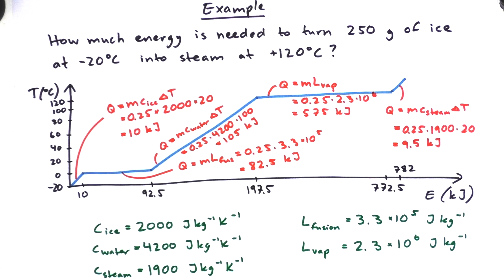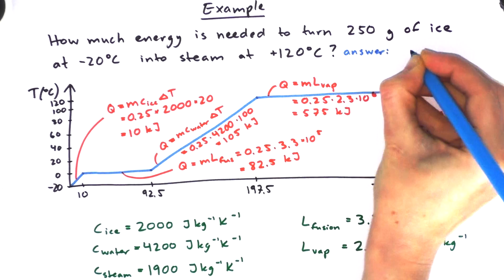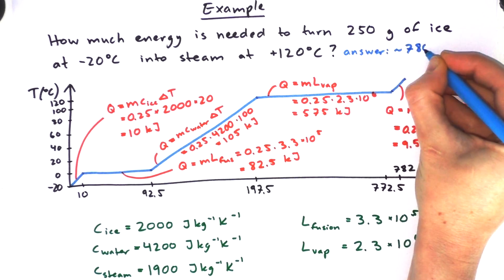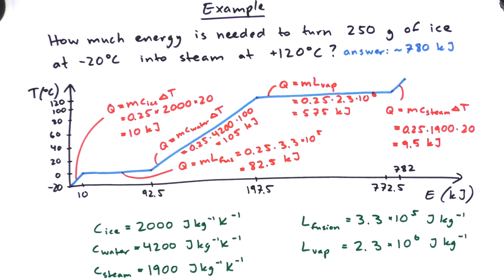Now just think about significant figures. If you look at all of the values that we have written in green, they're all to two significant figures. And all of the values in the beginning of the problem were also pretty much two significant figures. So that means that we should probably round our final answer to two significant figures as well. So we're going to say that the answer is that we need approximately 780 kilojoules of energy.